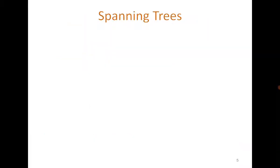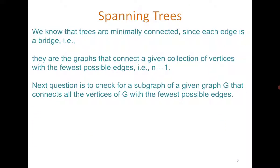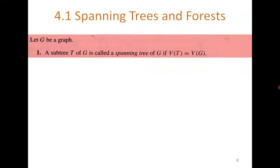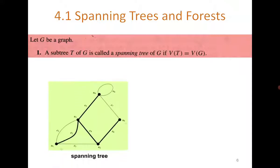A tree is minimally connected — it has n-1 edges, which is the least number of edges a connected graph can have. For a given graph, we look for a subgraph that connects all the vertices with the least number of edges, meaning we are looking for a tree connecting all vertices of graph G. A subgraph which is a tree of a graph is called a spanning tree if the vertex set of T and G are the same.